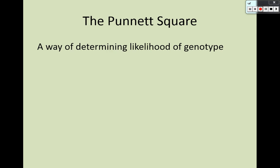What I want to show you is something called a Punnett square, which is a way of determining the likelihood of genotype. A lot of you have already figured this out just logically, but now I'm going to give you a formal way to figure it out. Some people call Punnett squares sperm-egg charts to separate the biology from the concept of family, but we're going to call them Punnett squares because that's what you'll encounter in higher-level biology courses and in college.